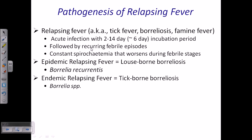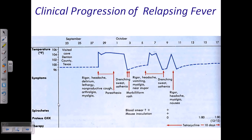Relapsing fever is also called tick fever, borreliosis, or famine fever. The acute infection starts after an incubation period of 2 to 14 days, especially around 6 days, followed by recurring febrile episodes. Epidemic relapsing fever is louse-borne borreliosis caused by Borrelia recurrentis, while endemic relapsing fever is caused by other Borrelia species.